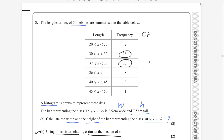How to find cumulative frequencies: we write the first frequency as is, then keep adding the next. 2, then 2 plus 16 is 18, 18 plus 20 is 38, 38 plus 8 is 46, 46 plus 3 is 49, and 49 plus 1 is 50. And it is 50 pebbles — this is correct.